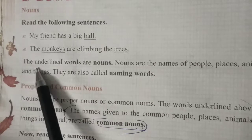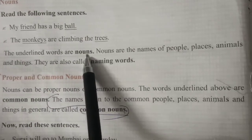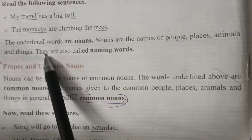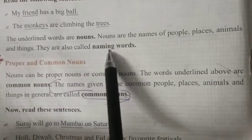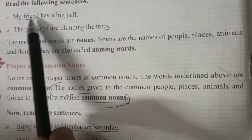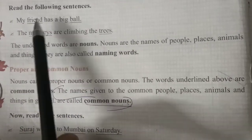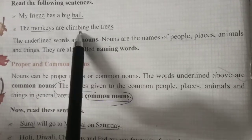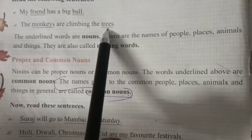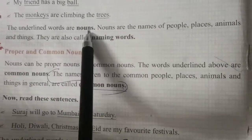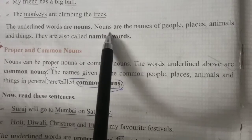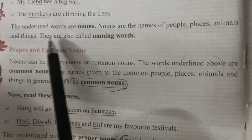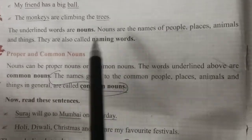The underlined words are nouns. Nouns are the names of people, places, animals, and things. They are also called naming words. For example: 'My friend has a big bowl' — underlined words are friend and bowl. 'Monkeys are climbing in the trees' — underlined words are monkeys and trees. The underlined words are nouns — naming words.